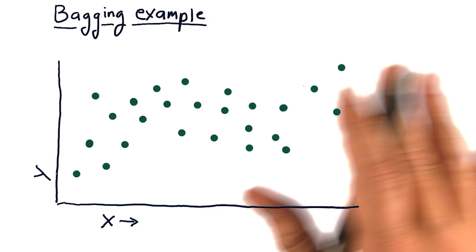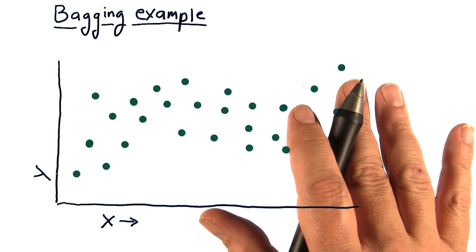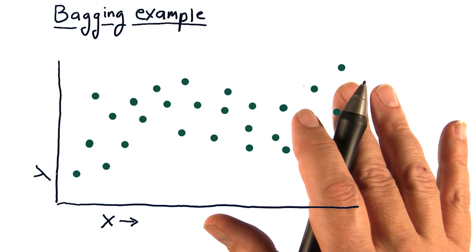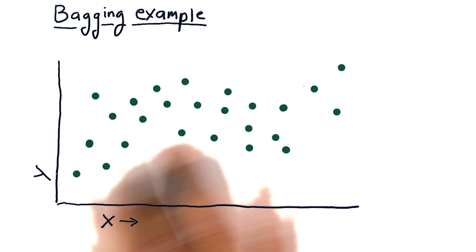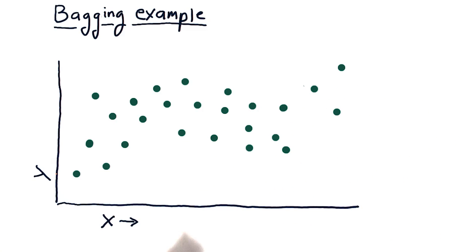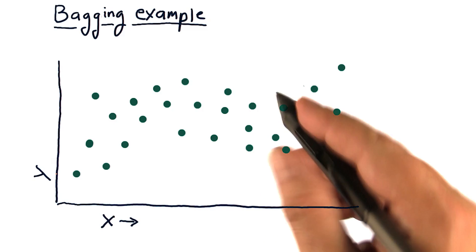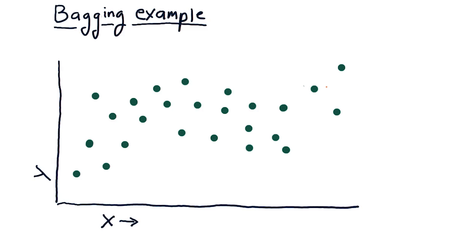So suppose this is some example data and we're going to create a bunch of one nearest neighbor models. We first have to select randomly some of our data to go into the first bag. So I'm going to circle some of these points randomly that represent the data for our first model.